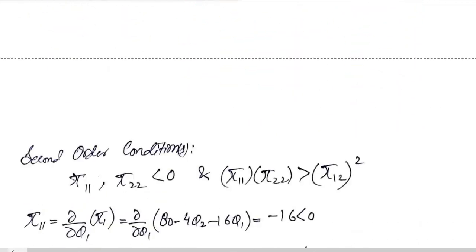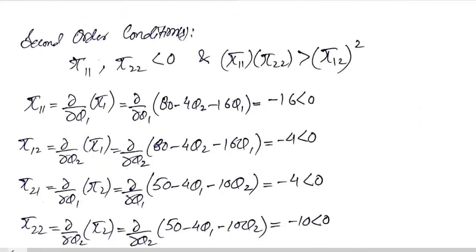And this is the second order condition, which requires the negativity of the first order and the second order direct partial derivatives, and then the product of the two should be greater than the square of the second order cross partial derivatives.